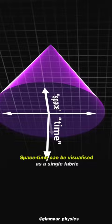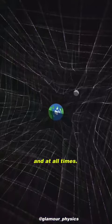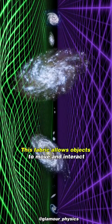Space-time can be visualized as a single fabric that envelops everything, existing everywhere and at all times. This fabric allows objects to move and interact with each other in the universe.